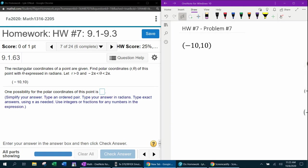The rectangular coordinates of a point are given. Find the polar coordinates of this point. Notice it says that r needs to be greater than zero, which means r needs to be positive. And theta can be any angle from negative two pi to two pi.